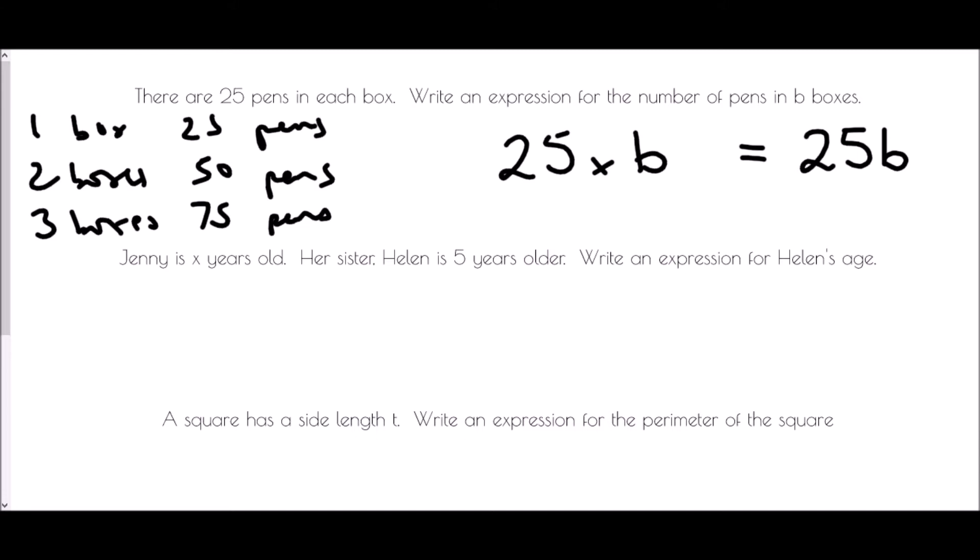In the next one, Jenny is x years old and her sister Helen is five years older. Write an expression for Helen's age. If Jenny is x and Helen is five years older, that would be her age plus five, so Helen would be x + 5. No matter how old Jenny is — if Jenny was 32 then Helen would be 32 + 5 = 37; if she was 23, she'd be 28.